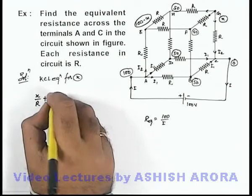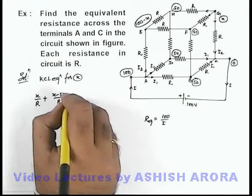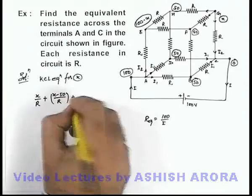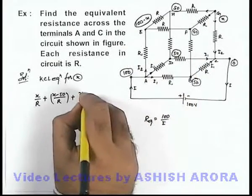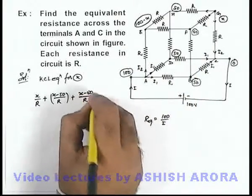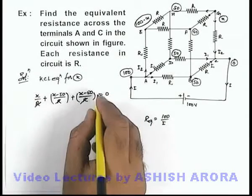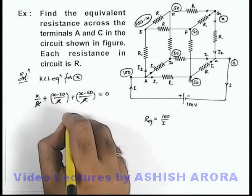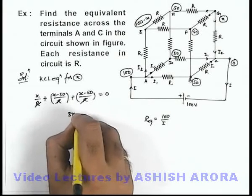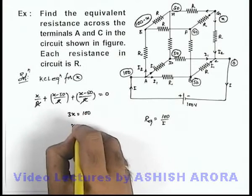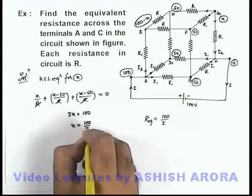Plus in this direction will again be x minus 50 by R, and this is equal to zero. Here R gets cancelled out and on solving, we are getting the value of x as 3x is equal to 100, or x we can take as 100 by 3 volt.